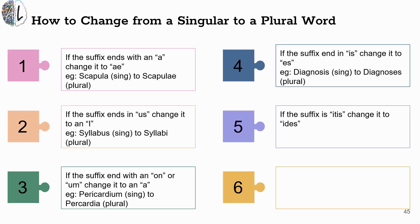Next, if a suffix ends in the letters ITIS, to make it plural we are going to change the letters to IDES. So, for example, arthritis refers to a singular event or joint. Arthritides refers to multiple or plural joints of the body.